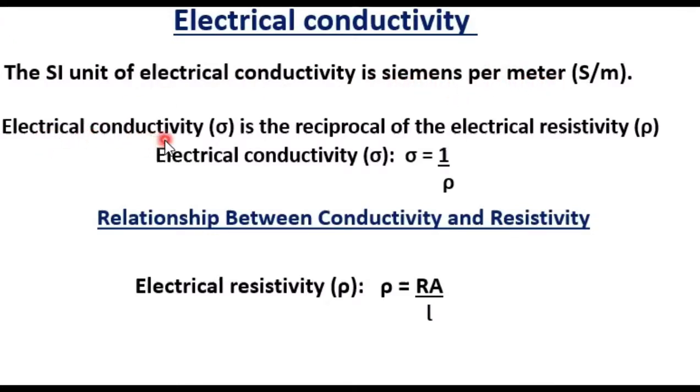Electrical conductivity, sigma, is the reciprocal of electrical resistivity. This is given by sigma equals one divided by rho, the resistivity. For a material with uniform cross-section, resistivity is given by rho equals resistivity multiplied by cross-sectional area divided by length of the material.